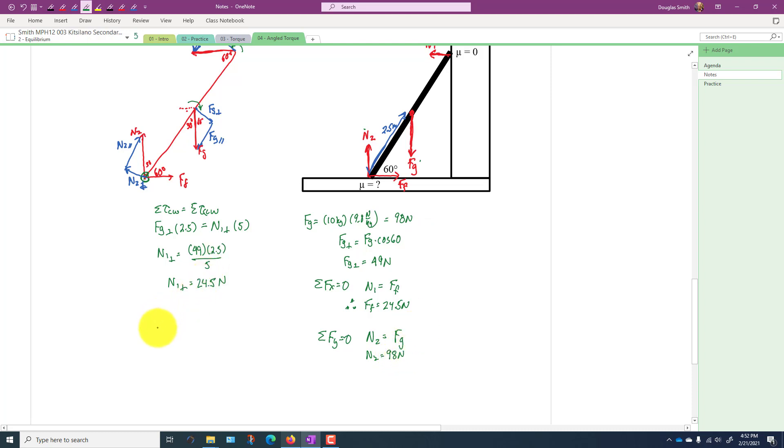And then the question is asking for what mu is. So mu, the coefficient of friction, is force of friction divided by the normal force. That's equal to 24.5 divided by 98. And we already kind of did this calculation - if you double 24.5 you get 49 and you double 49 again you get 98, so this is 0.25.